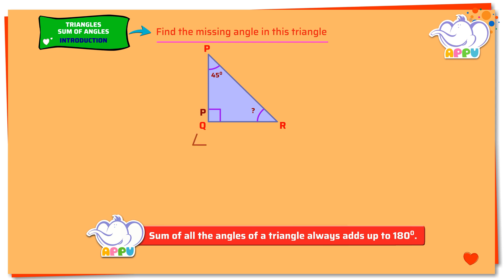Angle P plus angle Q plus angle R equals 180 degrees. 45 degrees plus 90 degrees plus angle R equals 180 degrees. 135 degrees plus angle R equals 180 degrees.